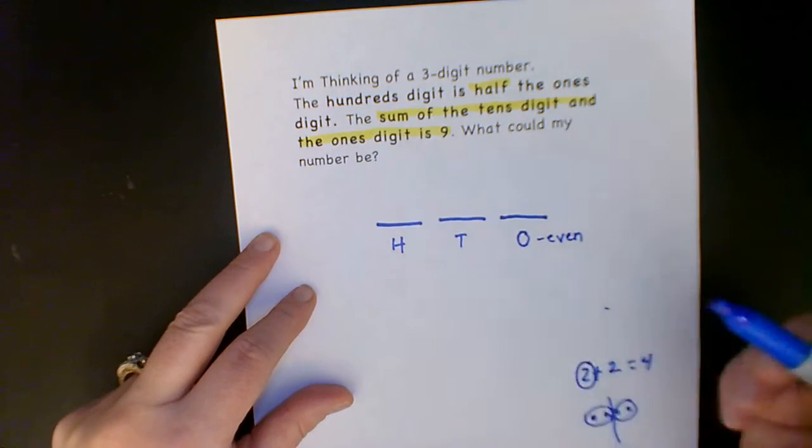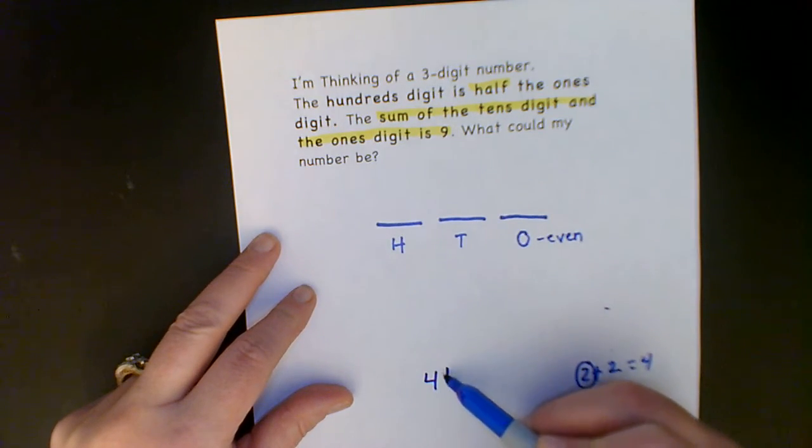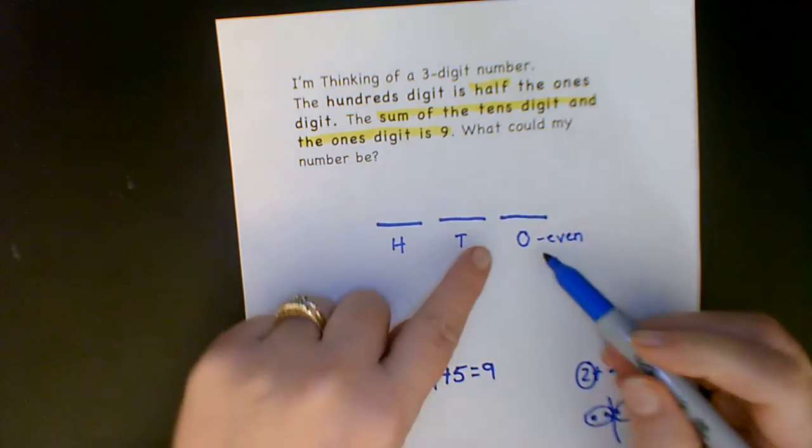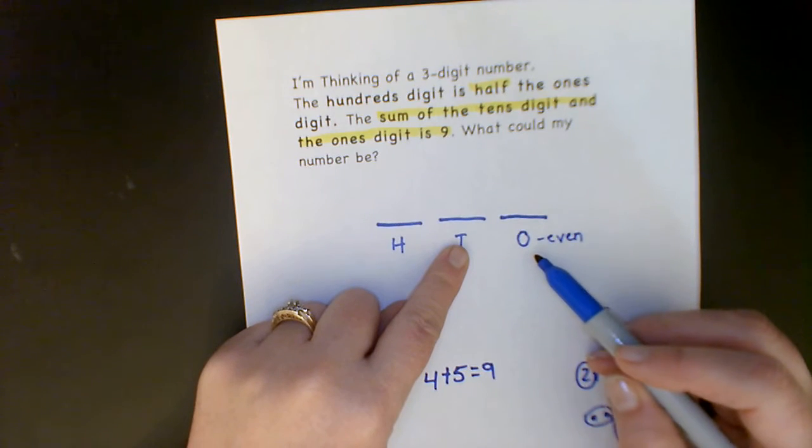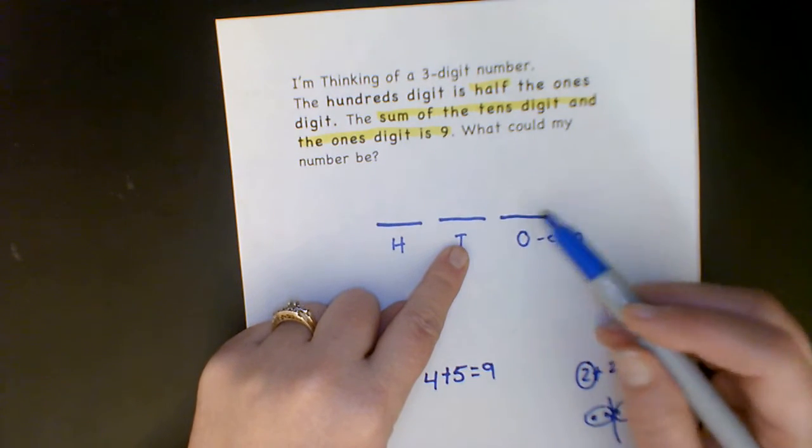So the easiest way to do this, at least for my brain, is to think of what are some numbers that go together to make nine? Well, I know that four plus five equals nine. So whatever I'm putting in my tens and my ones needs to equal nine.